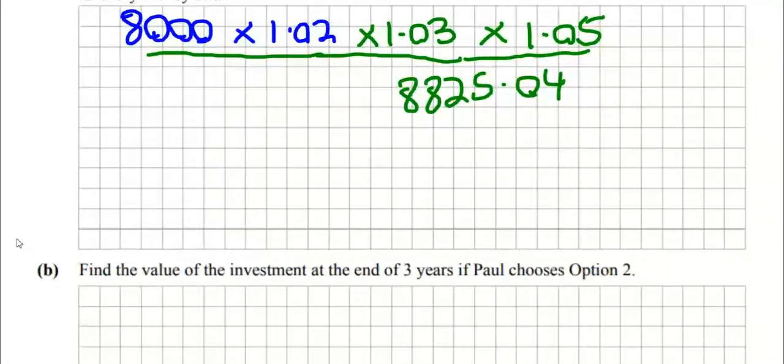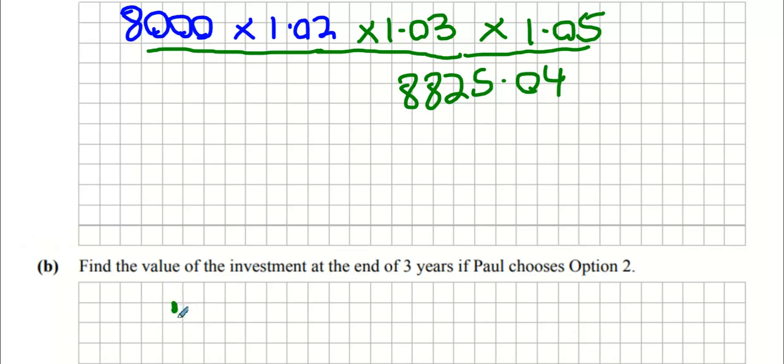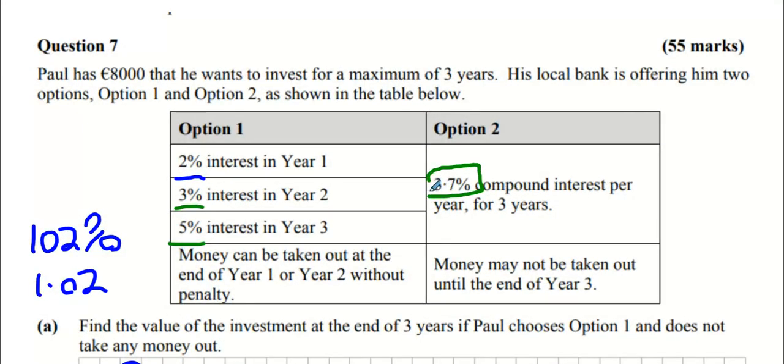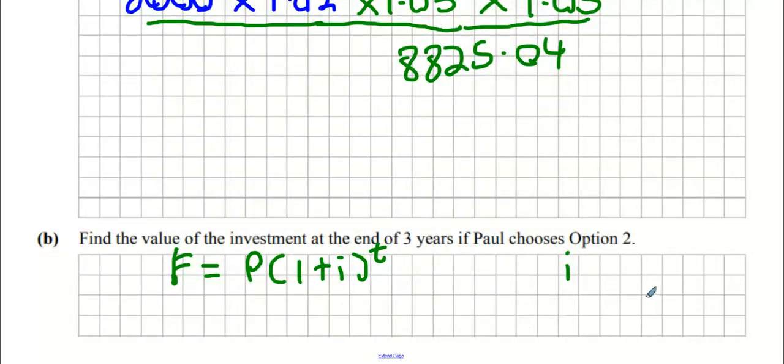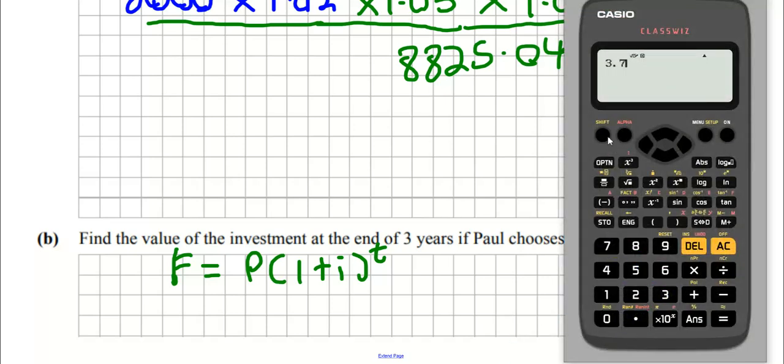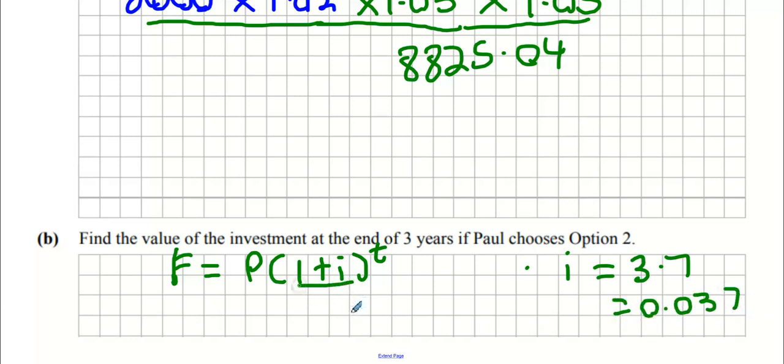What happens if we choose option two? There is a formula for this in your tables, it's called final value: P times (1 + i) to the power of t. What's our interest rate? 3.7%. I'm about to make a mistake - i has to be in decimal form, not percentage form. So 3.7% is 0.037.